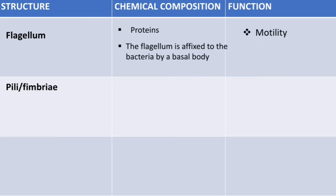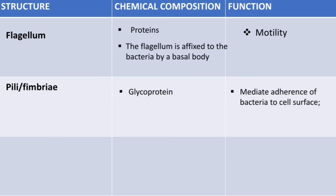Next we have fimbriae or pili. The chemical composition of pili is glycoprotein. Their function is to mediate adherence of the bacteria to cell surfaces or mucosa. Another function is seen in sex pili, which are for reproduction — exchanging genetic material.